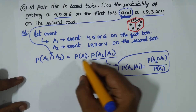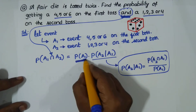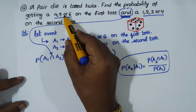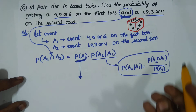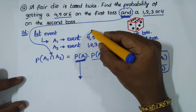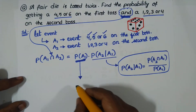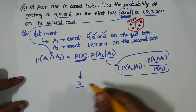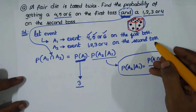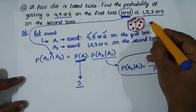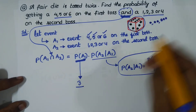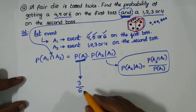Now, what is the probability of event A1 — getting 4, 5, or 6 on the first toss? When you roll the die, the favorable outcomes are 4, 5, and 6, which is 3 outcomes. The total possible outcomes of the die are 6. So P(A1) = 3/6.